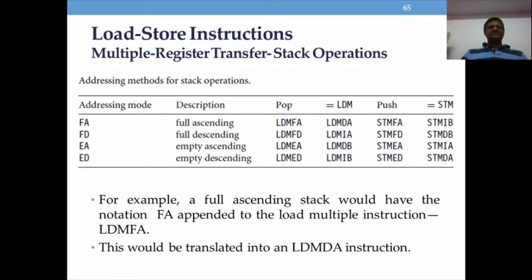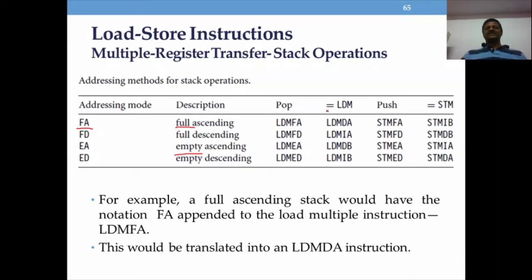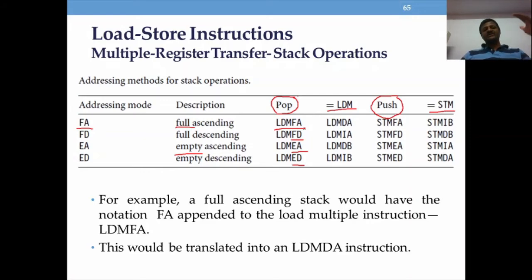We combine full/empty with ascending/descending to get four types: full ascending (FA), full descending (FD), empty ascending (EA), and empty descending (ED). These are applicable for both LDM and STM. LDM is used as a pop instruction; STM is used as a push because you are writing into the stack. So the variants are LDMFA, LDMFD, LDMEA, LDMED and STMFA, STMFD, STMEA, STMED.